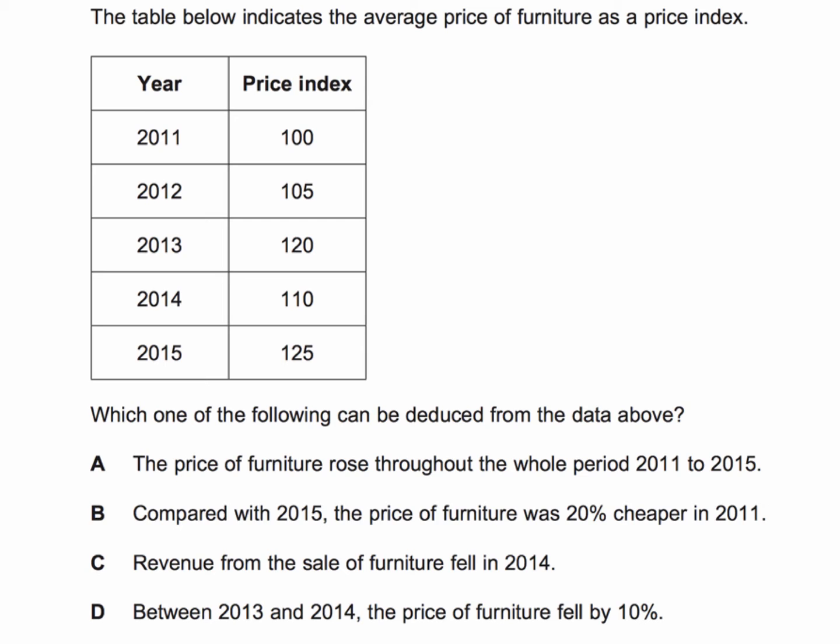The question is: which one of the following can you deduce from the data above on average price of furniture expressed as an index? This is the moment to press the pause button if you want to have a go at the question. Press play when you're ready — I'll come back with the answer and my explanation. If not, stay with me. The data shows indexed furniture prices — what can we deduce from the data?